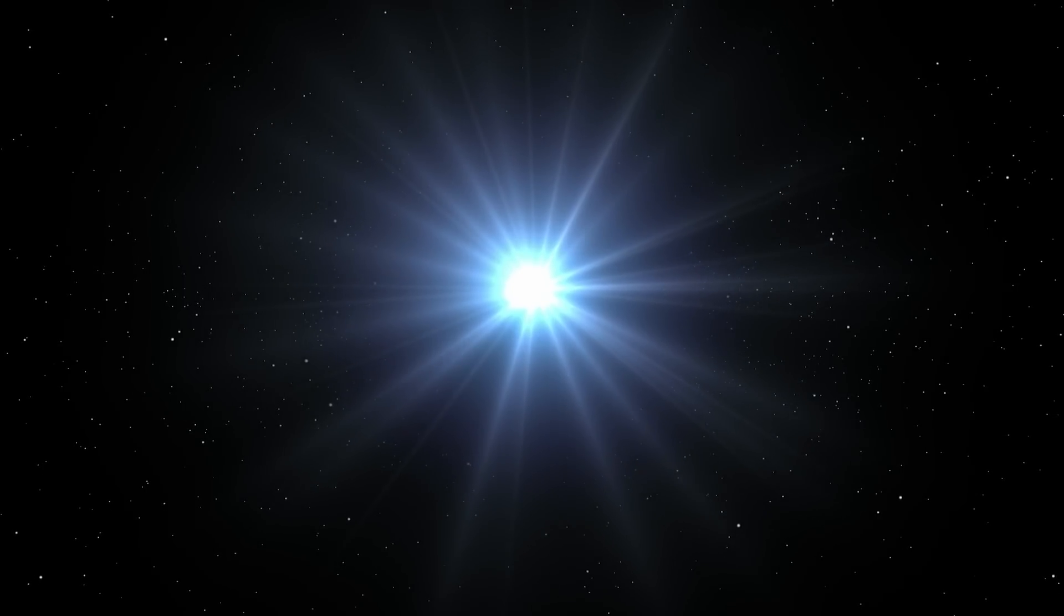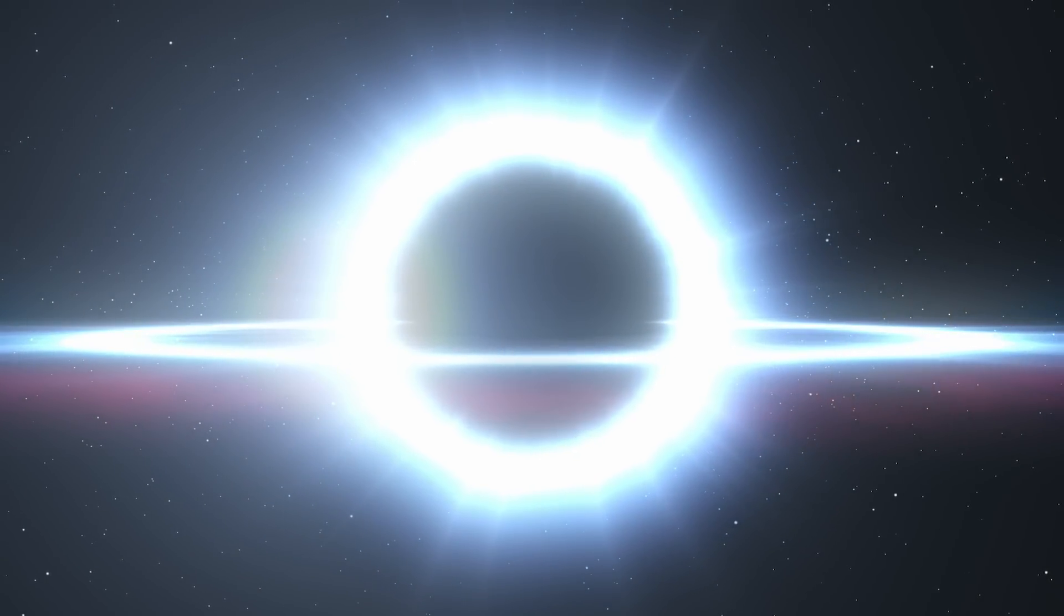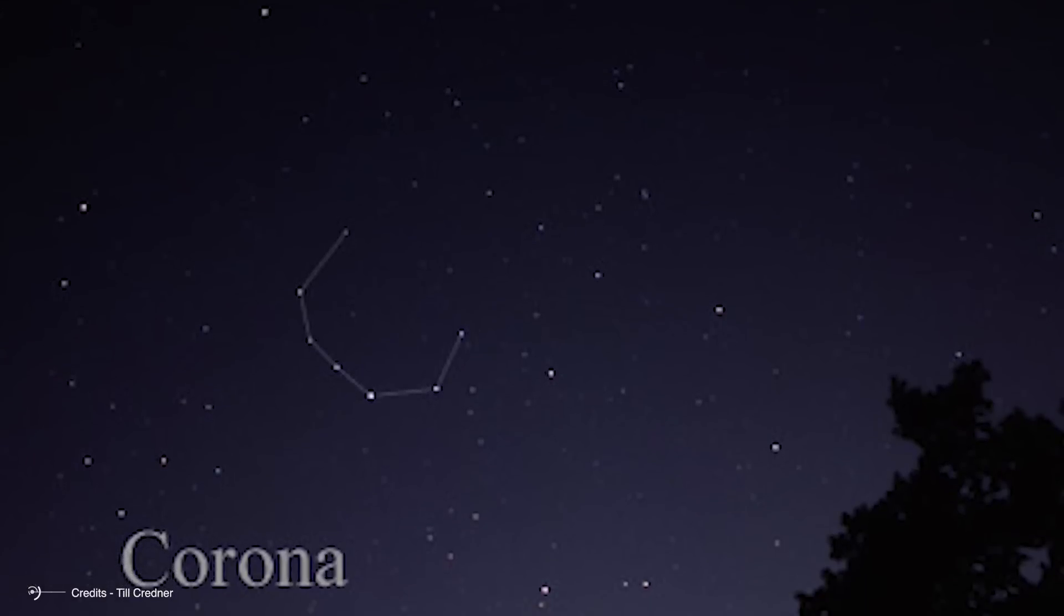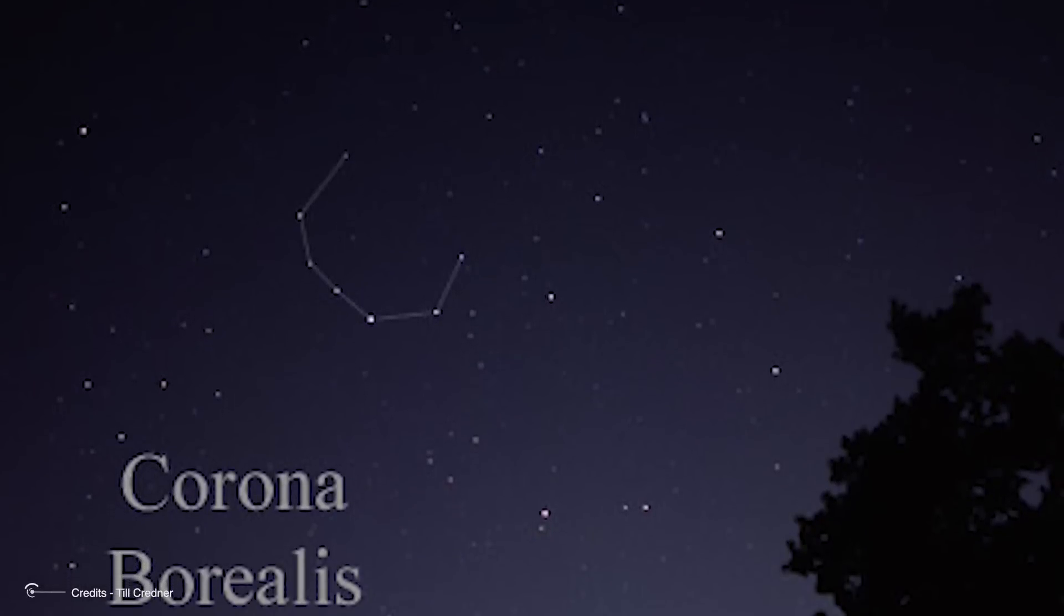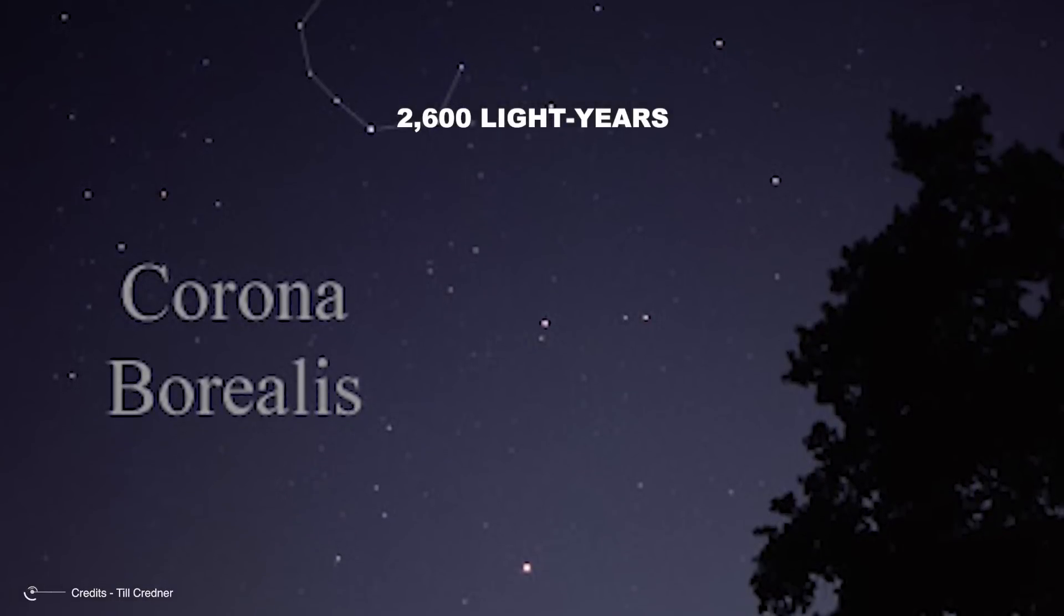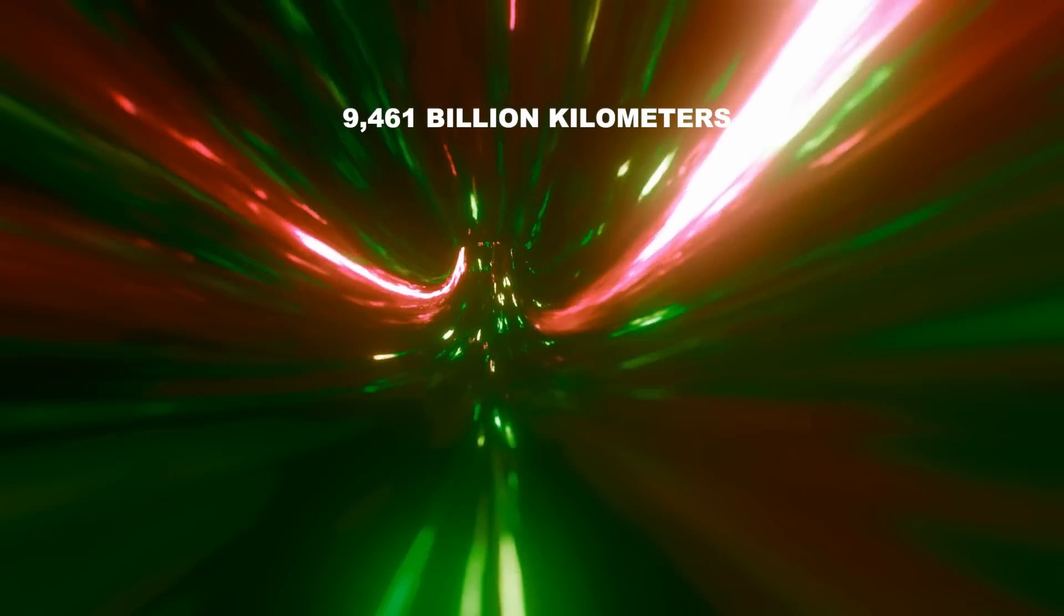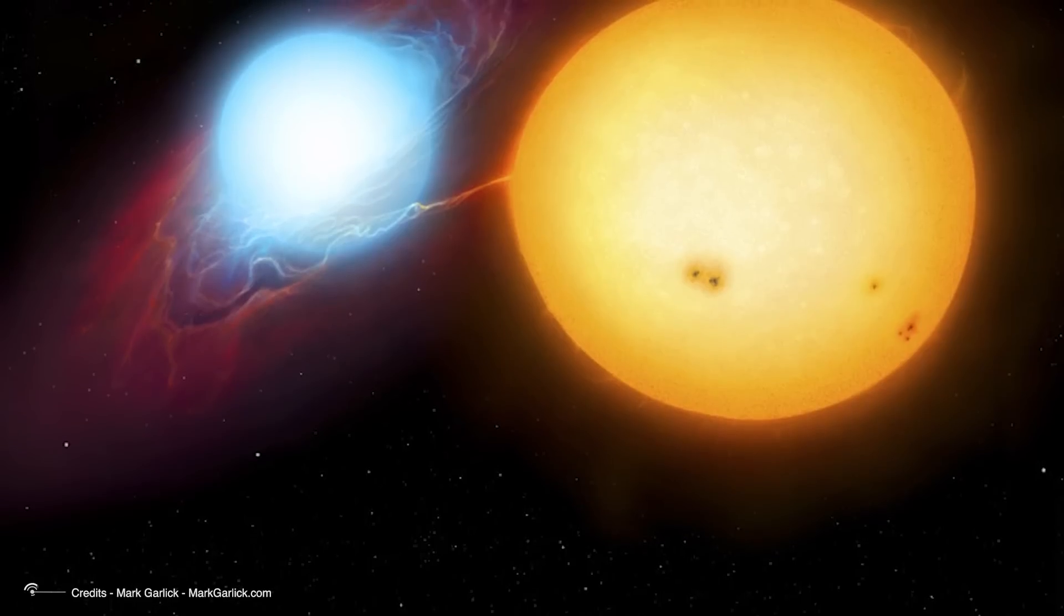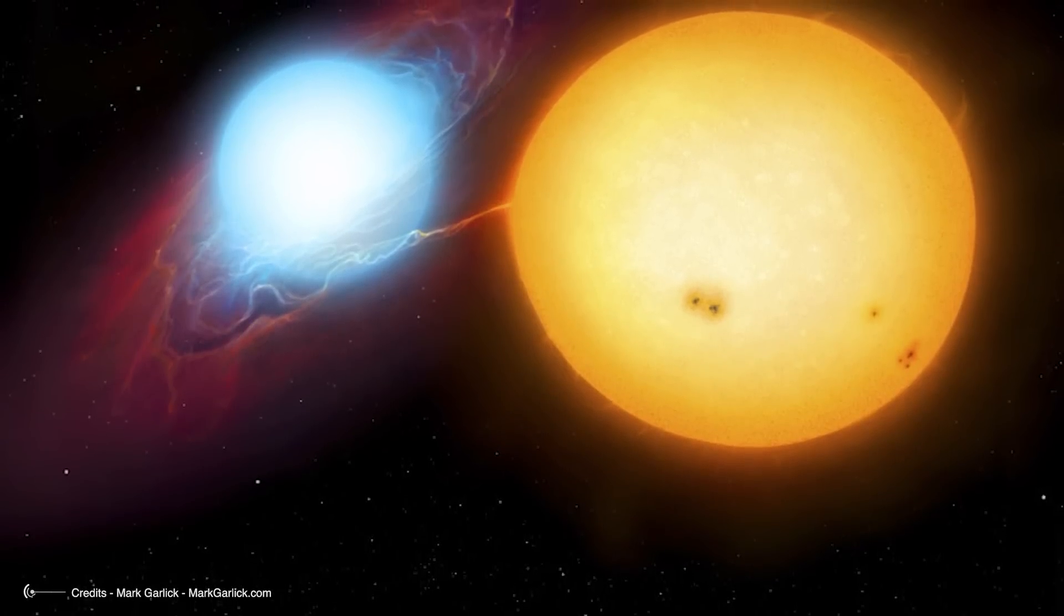Well, so far we have talked about novae in general, but what do we know specifically about the T Coronae Borealis system? T Coronae Borealis is also a binary system, meaning it consists of two gravitationally bound stars. A system located about 2,600 light-years from Earth. A light-year, it is almost unnecessary to remind, is the distance travelled by light in one year in the direction of the constellation Coronae Borealis.